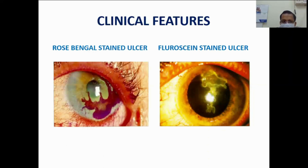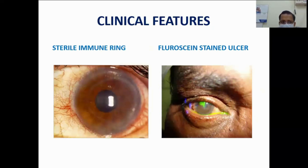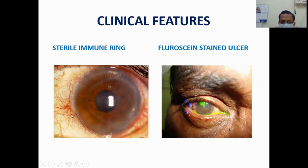This picture shows a rose bengal stained ulcer to the left and a fluorescein stained ulcer showing an extensive corneal lesion arranged centrally to the right. Another picture shows a sterile immune ring in the stroma, which is the body's immune response to the viral infection. In the left-side picture the cornea will not take up stain, and you can also see circumcorneal congestion. The left-side picture again shows a fluorescein stained ulcer.